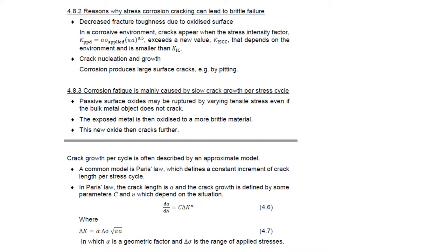Those are the two mechanisms to worry about for stress corrosion cracking under a constant tensile stress. For corrosion fatigue under a varying tensile stress, there is one additional mechanism: crack growth due to stress cycling. Each cycle, each time the material is loaded to high tension, this can cause a very small amount of additional cracking through the thin oxide at the crack tip.